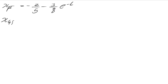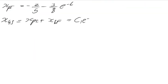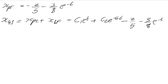The x general solution (x_gs) equals x_cf plus x_pi. So x_gs equals c₁e^t plus c₂e^(−5t) minus 2/5 minus (3/8)e^(−t). That's the complete general solution. Thank you guys for watching — if you have any questions please DM me. I'll leave the WhatsApp link with all the details, so please subscribe and follow for more.